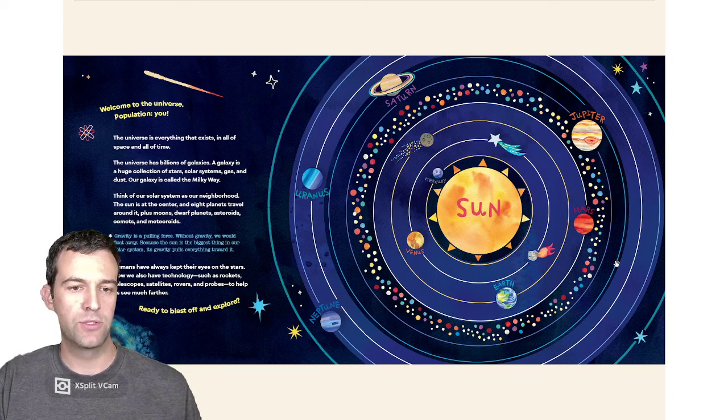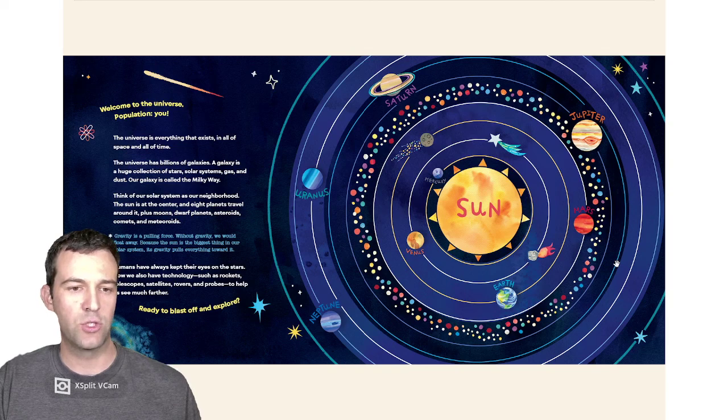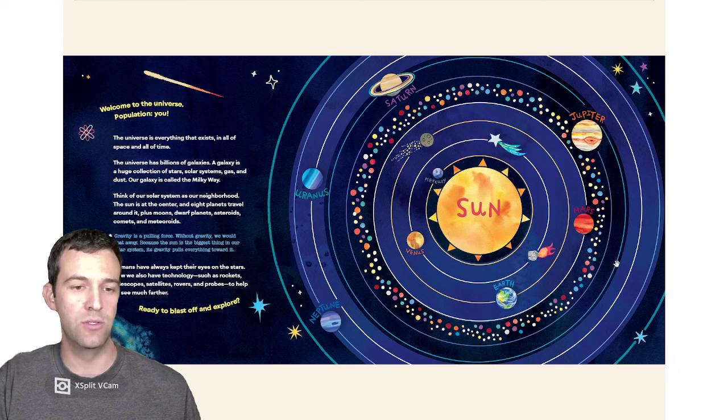Our galaxy is called the Milky Way. Think of our solar system as our neighborhood. The Sun is at the center and eight planets travel around it, plus moons, dwarf planets, asteroids, comets, and meteoroids.